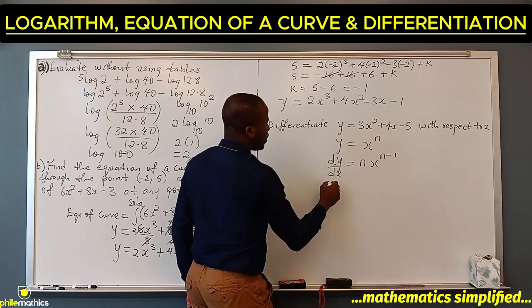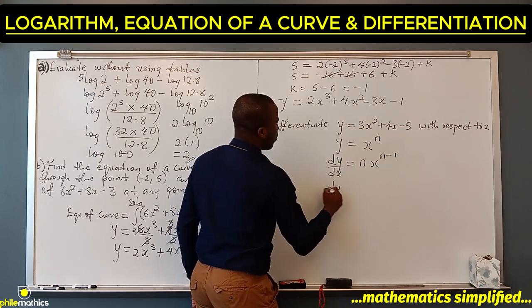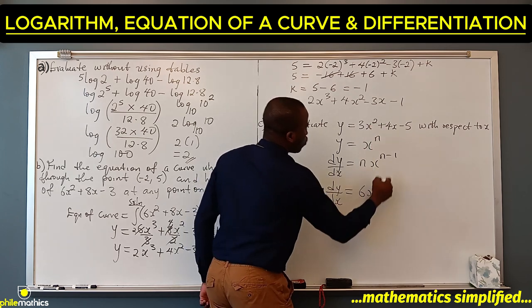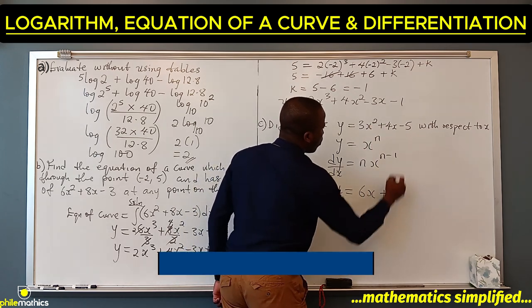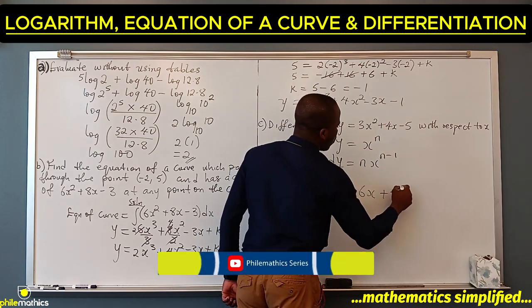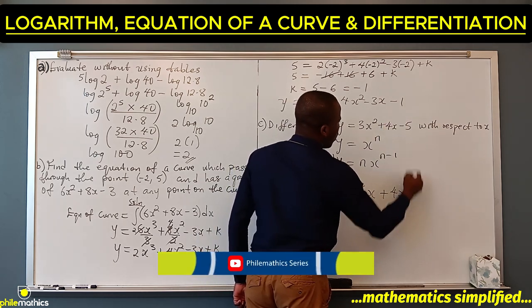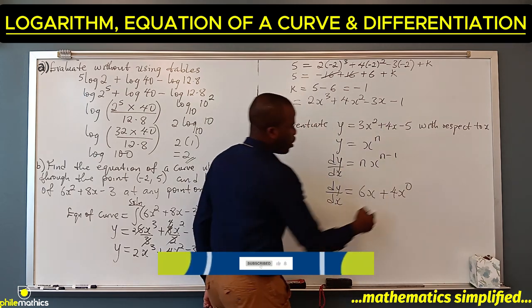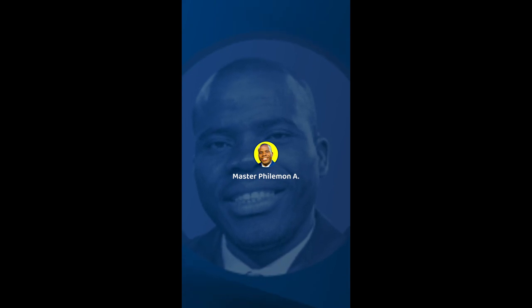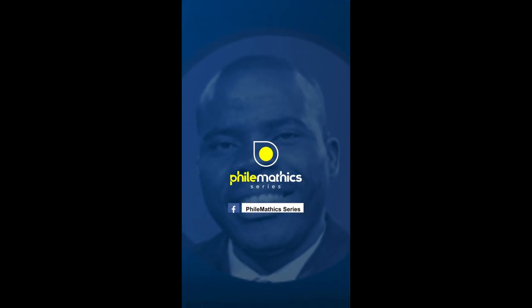If we apply that here, we have dy/dx equals 2 times 3, which is 6x to power 1, plus 4 times 1, which is 4x to power 0. x to power 0 is 1, and the derivative of a constant is 0. So the answer is 6x plus 4.